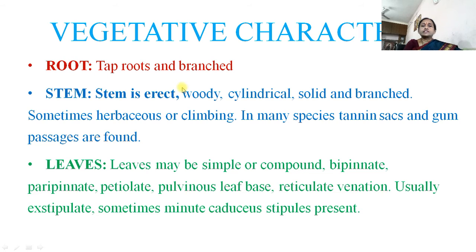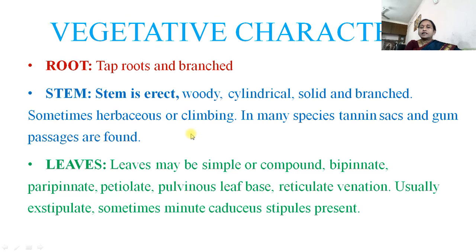Vegetative characters — Roots: generally tap roots and branched. Stem is erect, woody, cylindrical, solid and branched; sometimes herbaceous or climbing. In many species, tannin sacs and gum secretions are found.